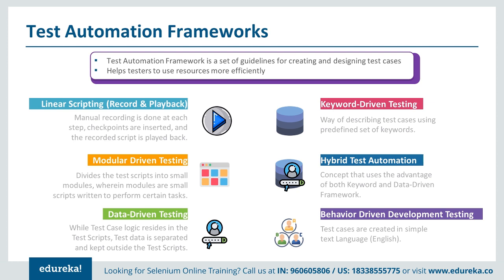The fourth framework type is keyword-driven testing. You identify keywords from your test cases — for example, 'launch the browser,' 'navigate to the URL,' 'click on a web element.' These keywords are identified from test steps and created as methods. Each keyword becomes a method, and these methods are added inside Excel sheets, driving the methods from Excel in a data-driven manner. That is known as keyword-driven testing.